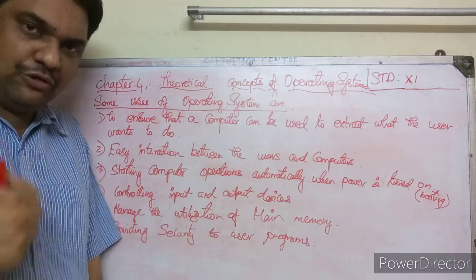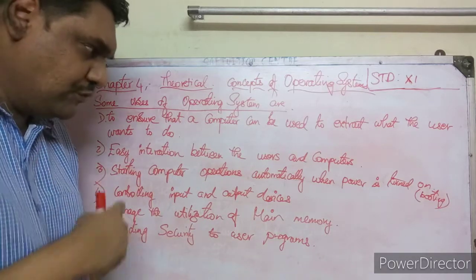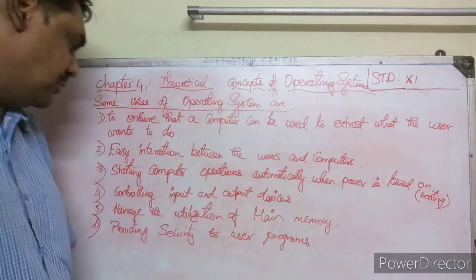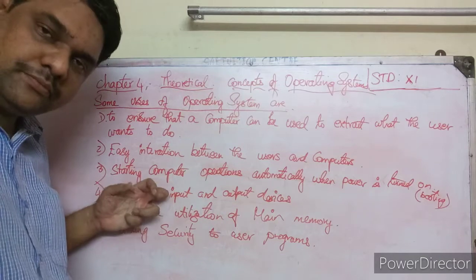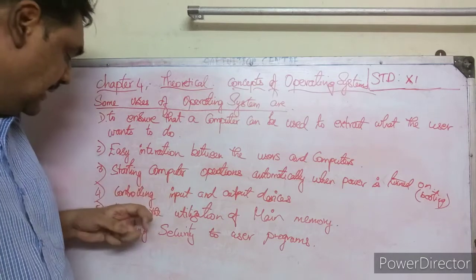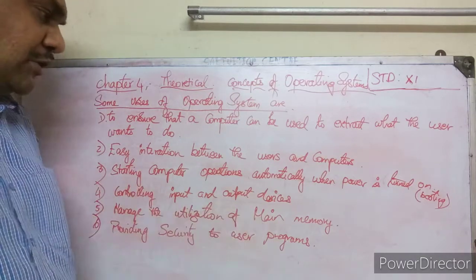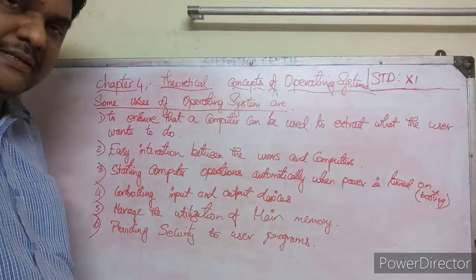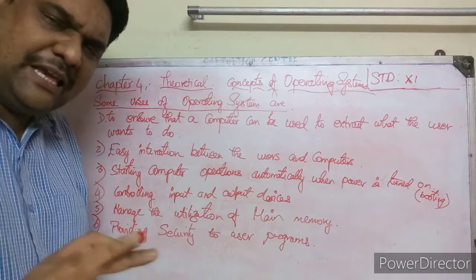The booting process is fully controlled by the operating system. That is the third use. The fourth use is controlling input and output devices — keyboard, mouse, printer, scanner.